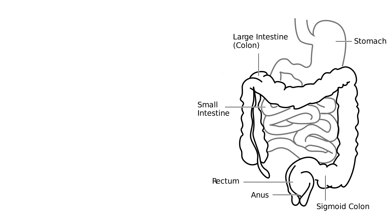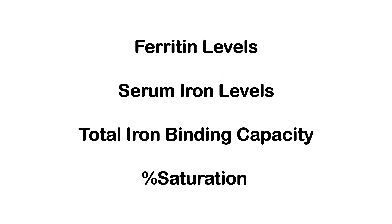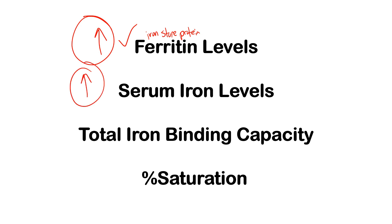Now let's look at lab results. Ferritin is the iron storage protein, so with excess iron you would have increased ferritin levels. Serum iron levels will also be increased. As for total iron binding capacity (TIBC), this refers to the ability or capacity for iron to be bound to something in the body — specifically transferrin.